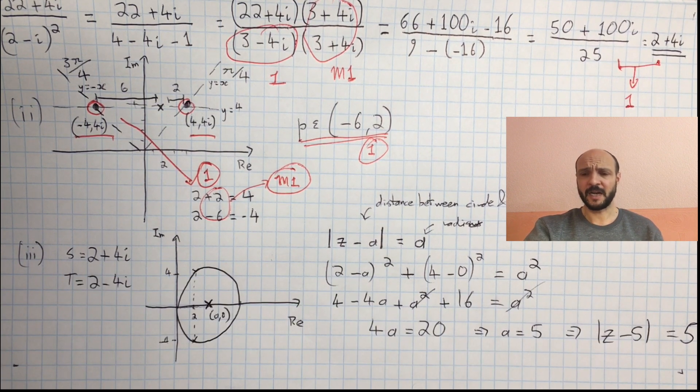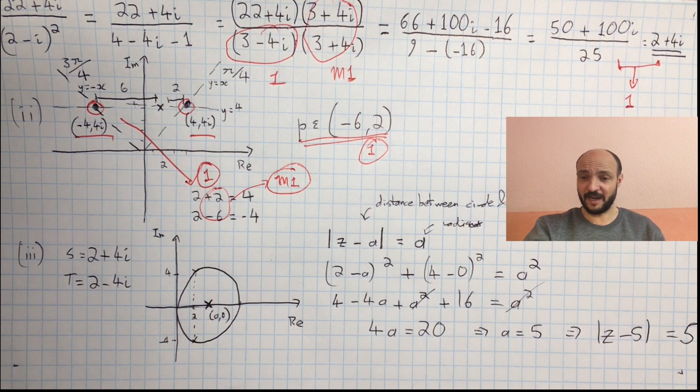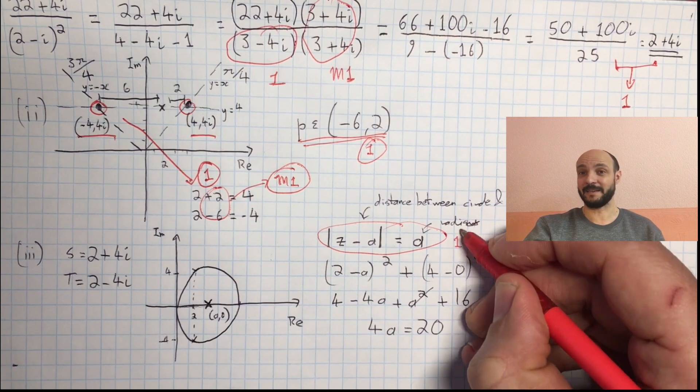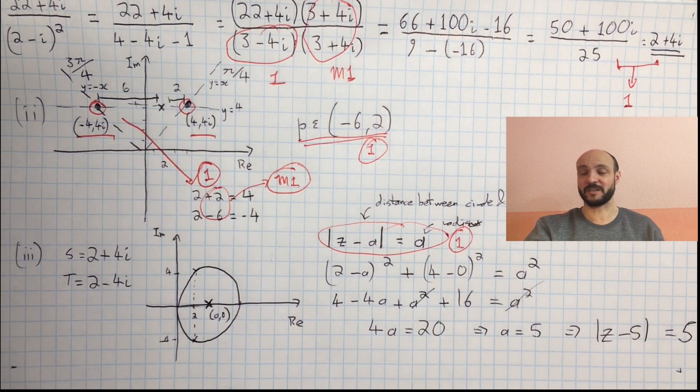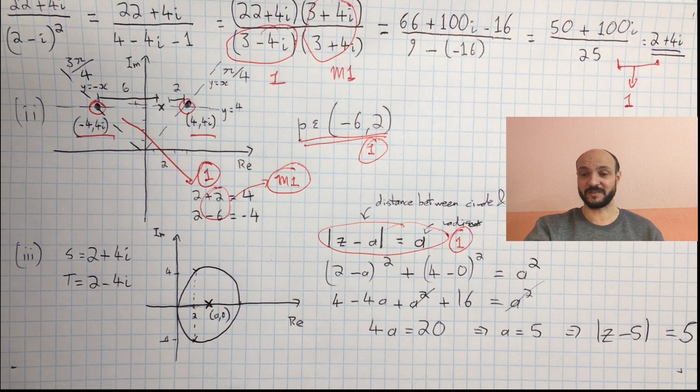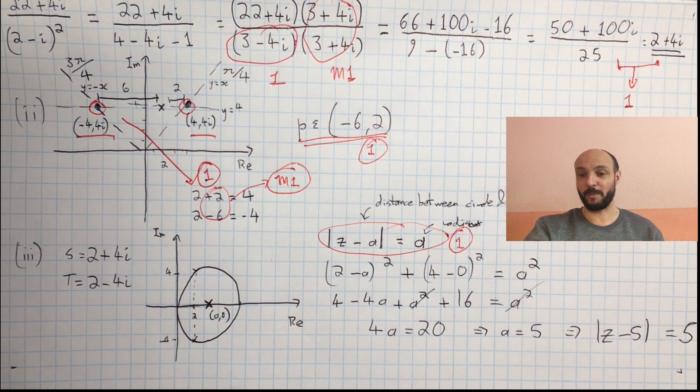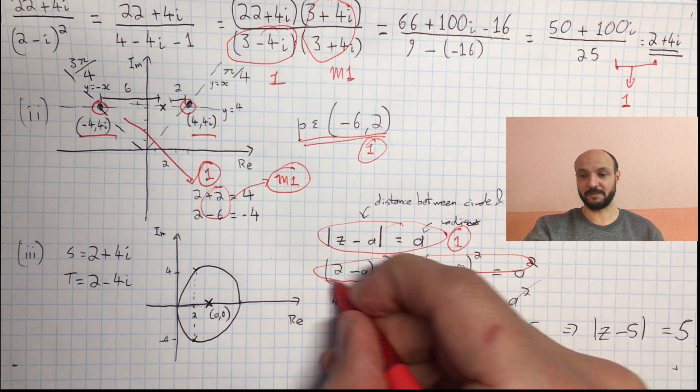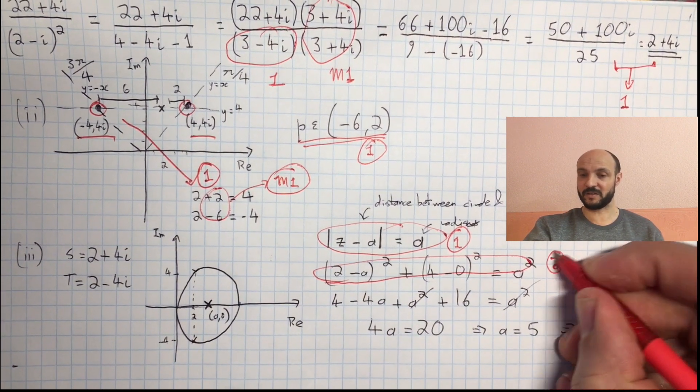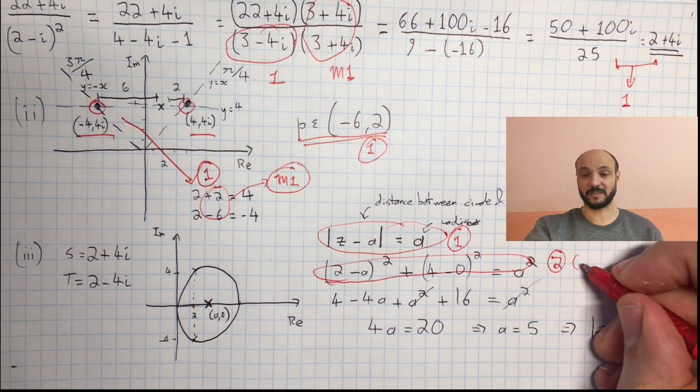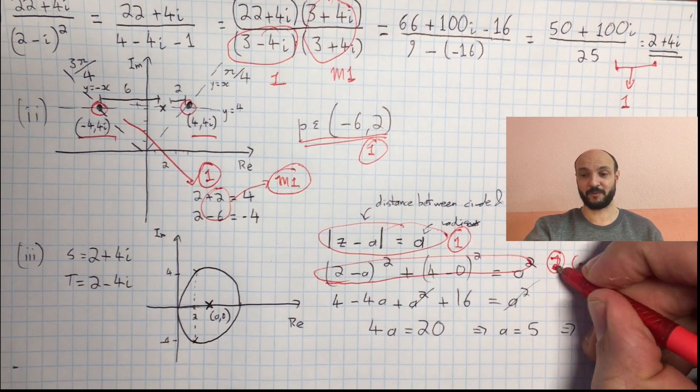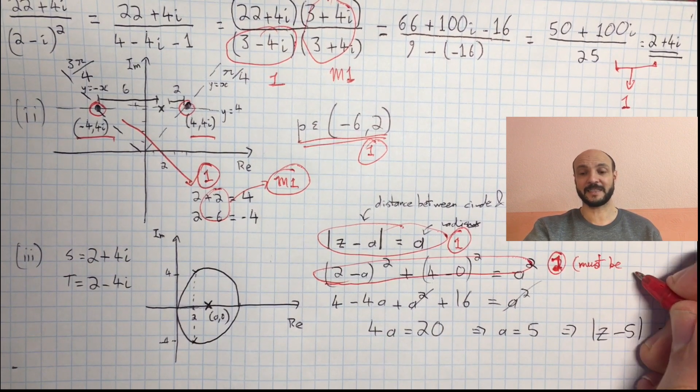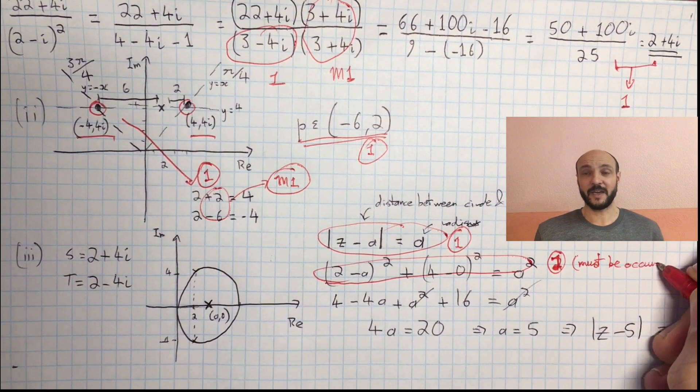The third part, our first mark is for identifying that in our case the modulus of z minus a equals a. So we're given that we want it in the form modulus of z minus a equals k. If we say that modulus of z minus a equals a we get one mark. Our second mark we get for correctly putting the numbers of the circle equation into the circle equation. Our 2 minus a squared plus 4 minus 0 squared equals a squared. And our third mark is an accuracy mark for finally getting the mod of z minus 5 equals 5.